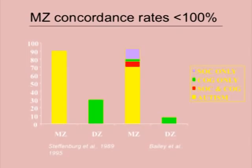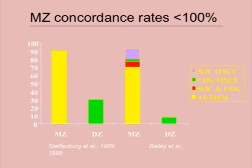The first argument proposed to say it cannot be all genetic comes from twin studies. You can see here two of the major twin studies, and I will refer to the one from the UK by Tony Bailey, Michael Rutter and their group, which showed — if you look at the yellow bar — the proportion of MZ twins concordant for autism. One is autistic and then the question is how many of the co-twins are autistic as well. In that study it was close to 70%. In other studies it is slightly higher, but the idea is that it is not 100%.